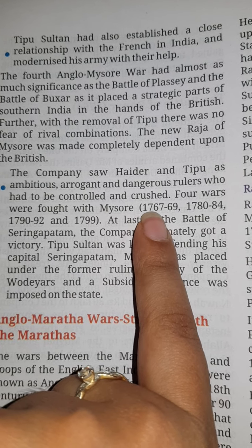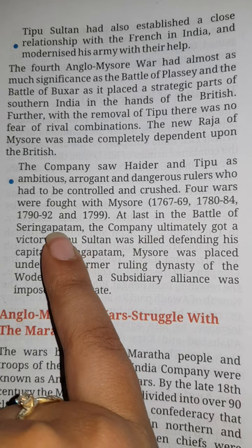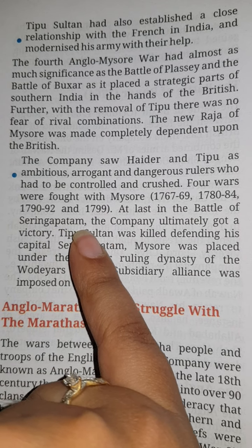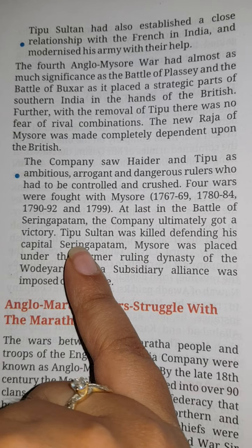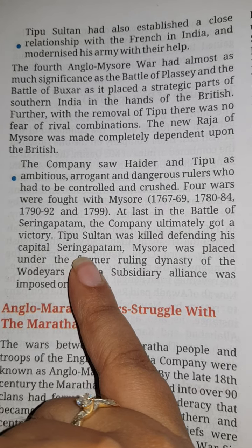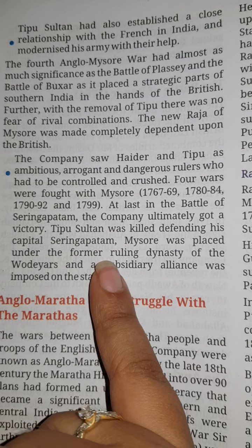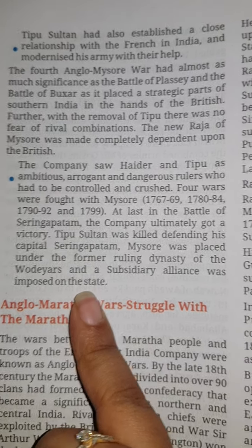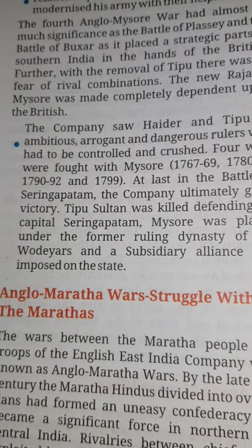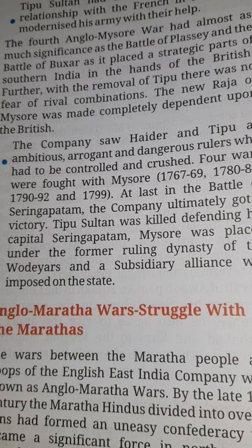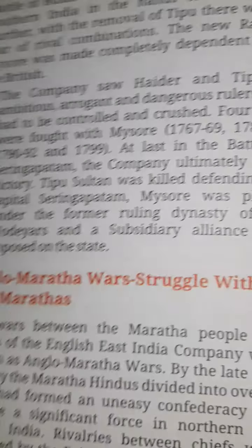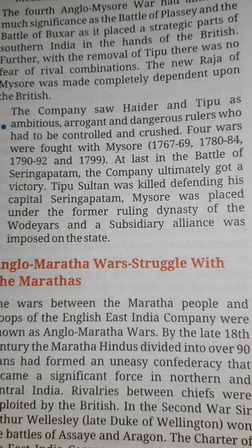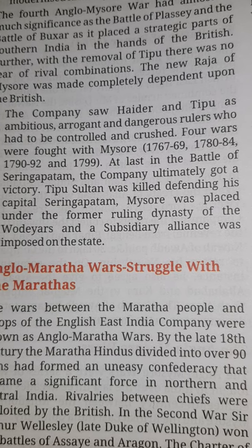Four wars were fought with Mysore: 1767-69, 1780-84, 1790-92, and 1799. At last, at the Battle of Seringapatam, the company ultimately got the victory. Tipu Sultan was killed, defeating his capital Seringapatam. Mysore was placed under the former ruling dynasty of the Wodeyars, and a subsidiary alliance was imposed on the state. Hyder Ali and Tipu Sultan were defeated and the British East India Company gained victory and control over the area of Mysore.